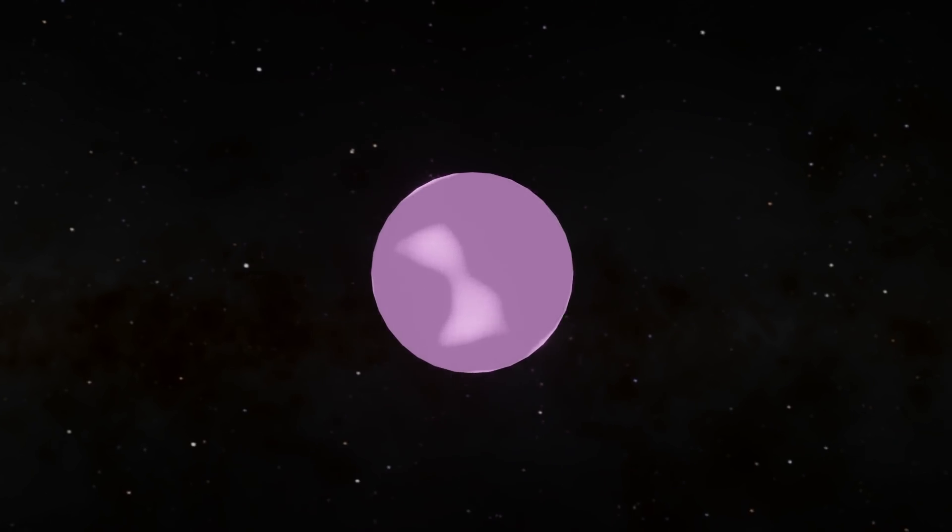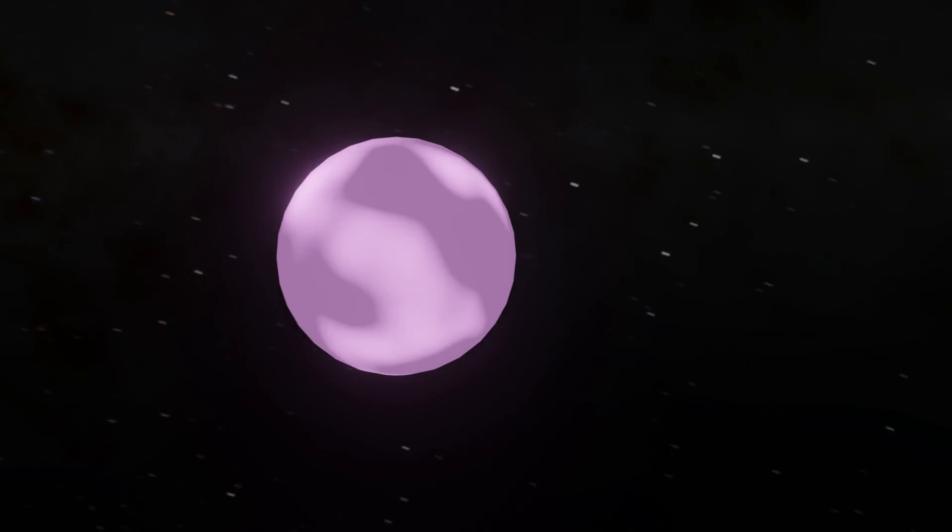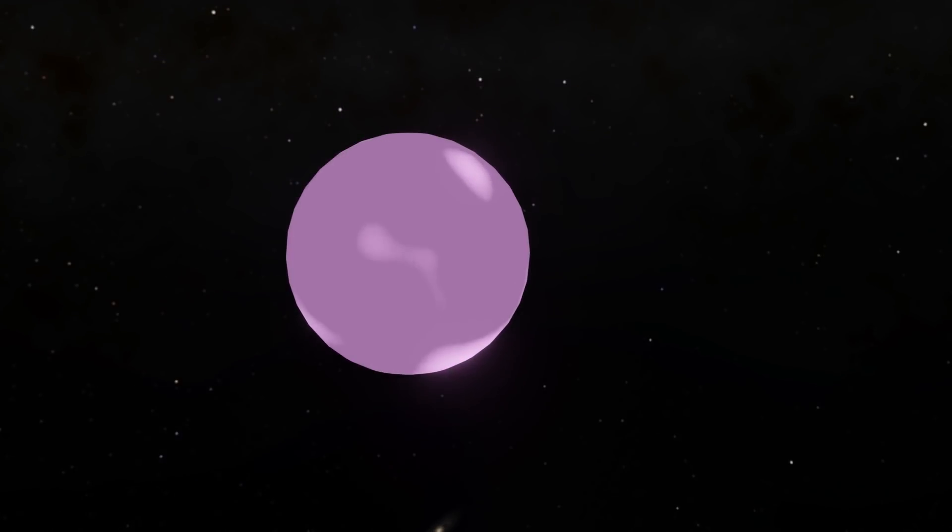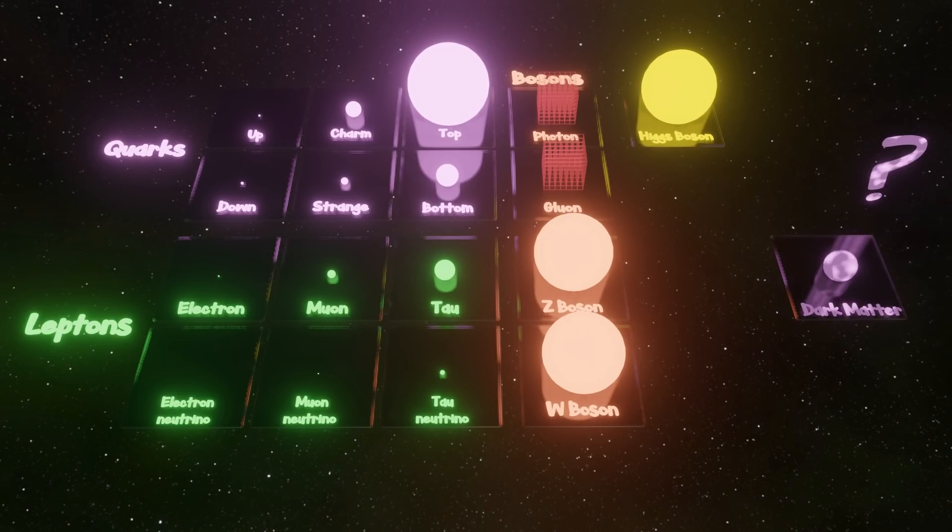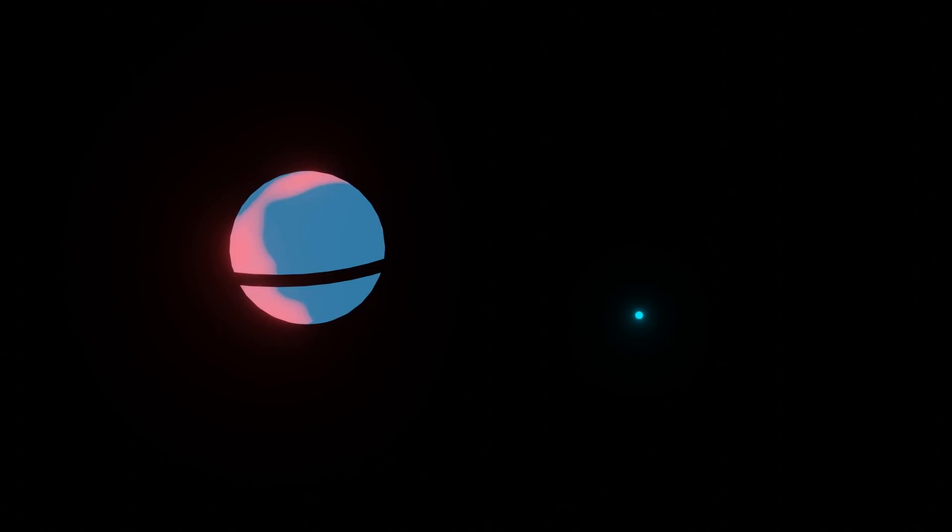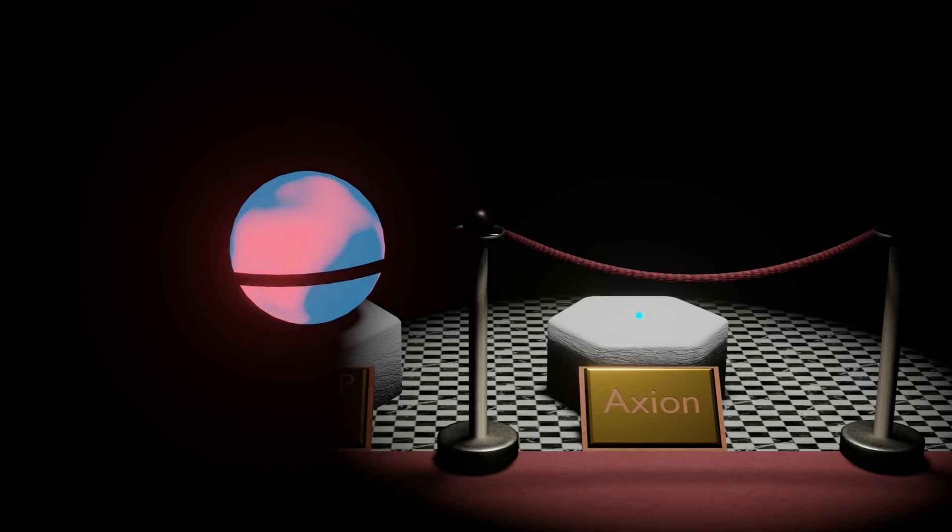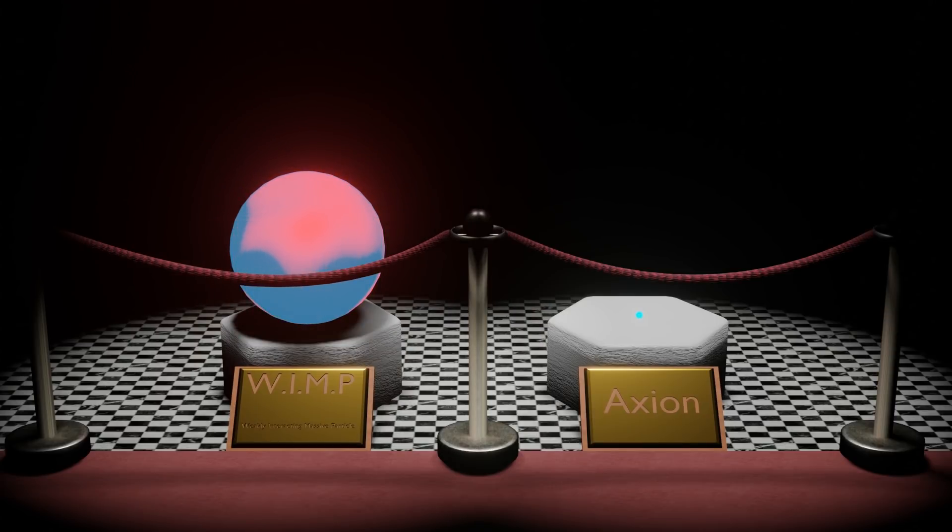Everything regarding dark matter is, of course, purely theoretical because, well, we don't know. We assume it's a quantum object because, I mean, everything else is. But it very well could not be, and that's fascinating. It could be an axion, it could be a WIMP, it could be both, and it could be neither.